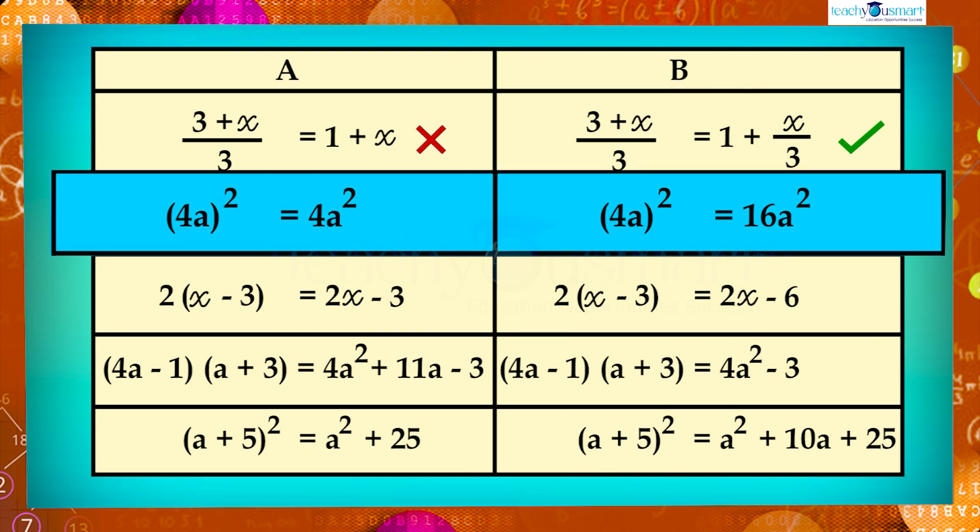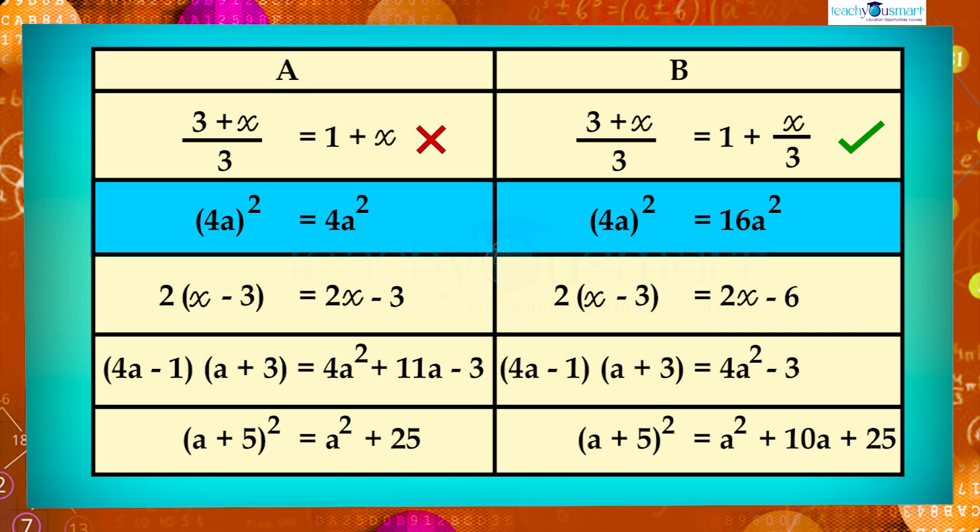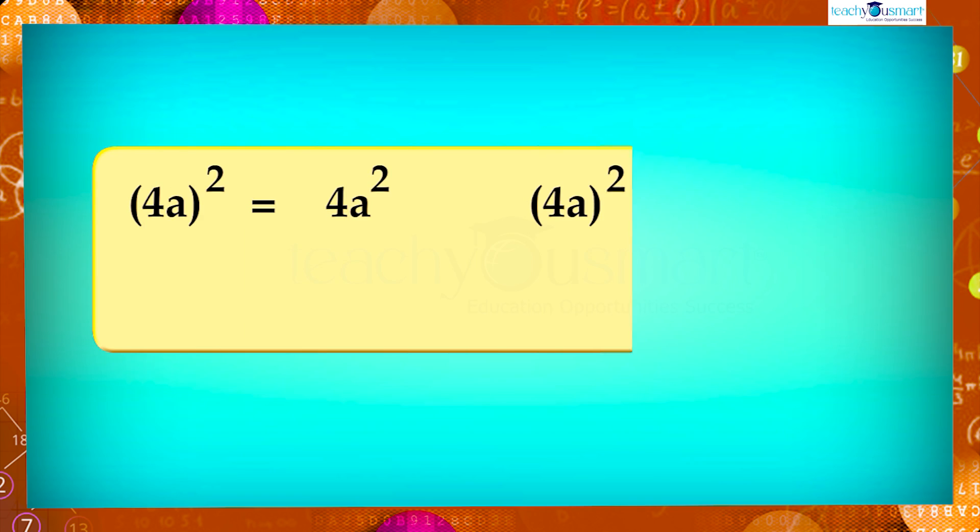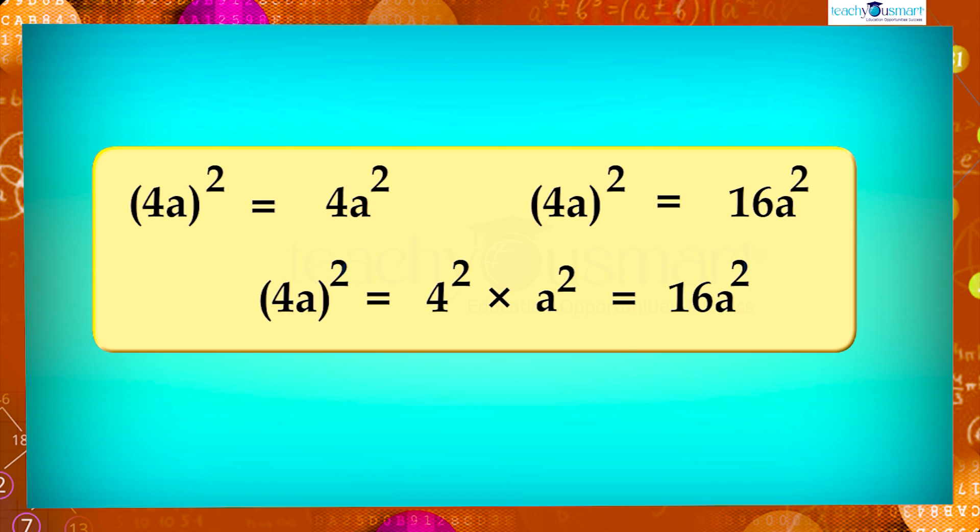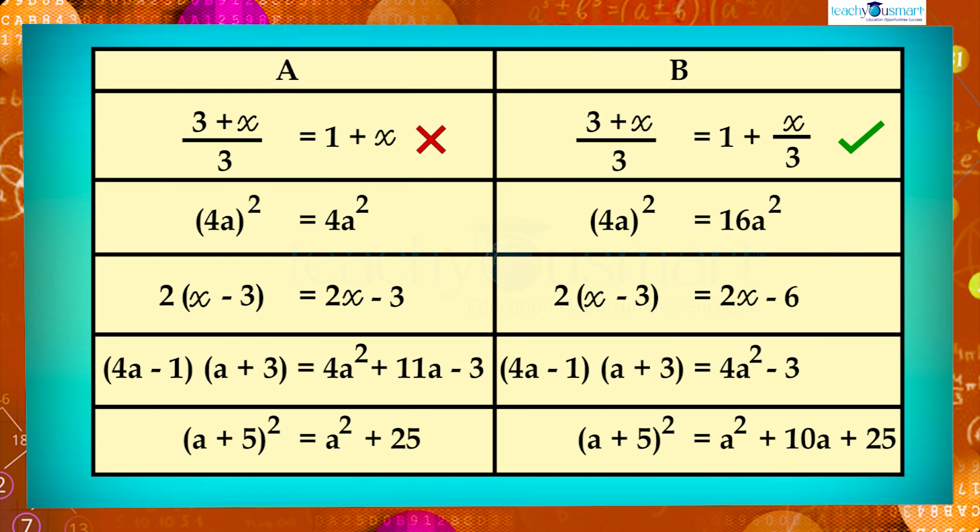In 4a the whole square, the monomial is 4a. While squaring a monomial we should take the square of both numerical coefficient and each factor it contains. So 4a the whole square equals 4 square multiplied by a square, equals 16a square. Therefore B is correct.